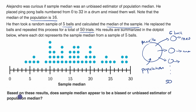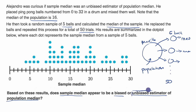Now they ask us: based on these results, does the sample median appear to be a biased or unbiased estimator of the population median? Pause this video and see if you can come up with an answer. In order to be an unbiased estimator — and that is what you want your estimator to be — the sampling distribution for that statistic has to be evenly distributed about the true parameter for the population.